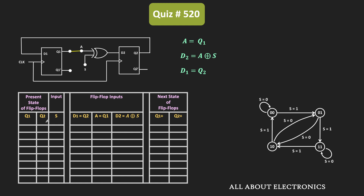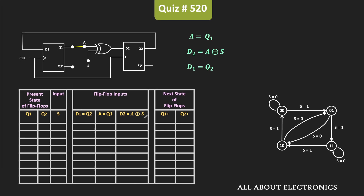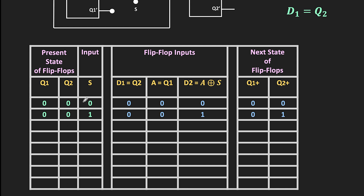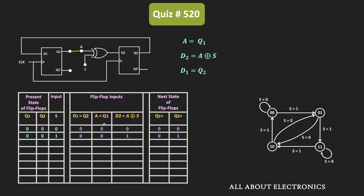Here, Q1 and Q2 are the present states of the flip-flop, while Q1+ and Q2+ represent the next state, and S is the other input to the XOR gate. When Q1 and Q2 are both 0 and S is 0, then D1 = Q2 = 0 and A = Q1 = 0, so A XOR S = 0 XOR 0 = 0, meaning D2 = 0. The circuit remains in the same state. When S is 1, it goes to the 0-1 state, which matches the given state diagram.